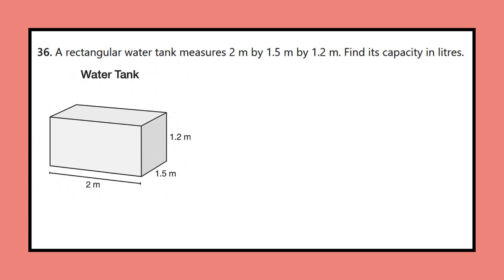Question 36: A rectangular water tank measures 2 m by 1.5 m by 1.2 m. Find its capacity in liters.